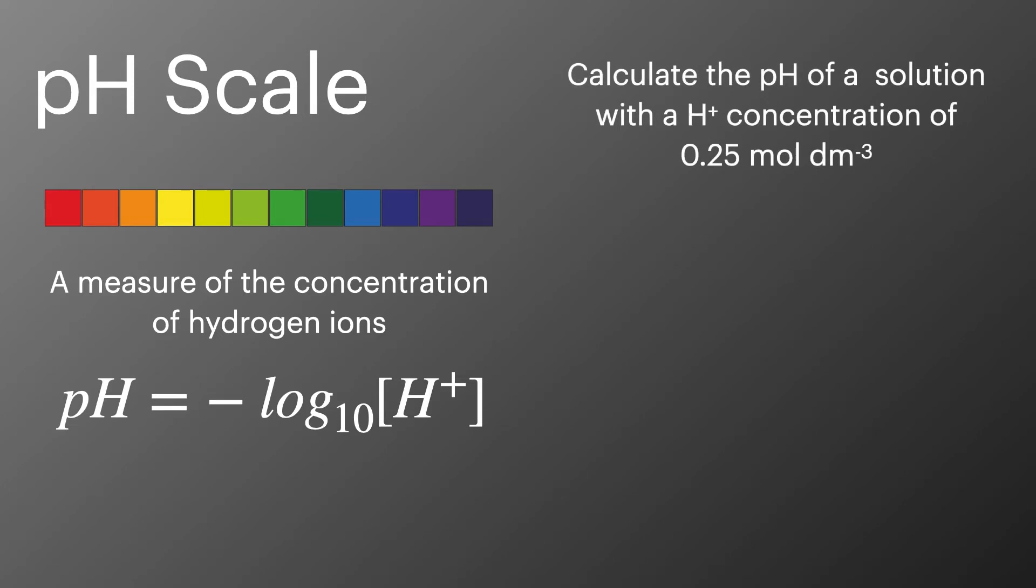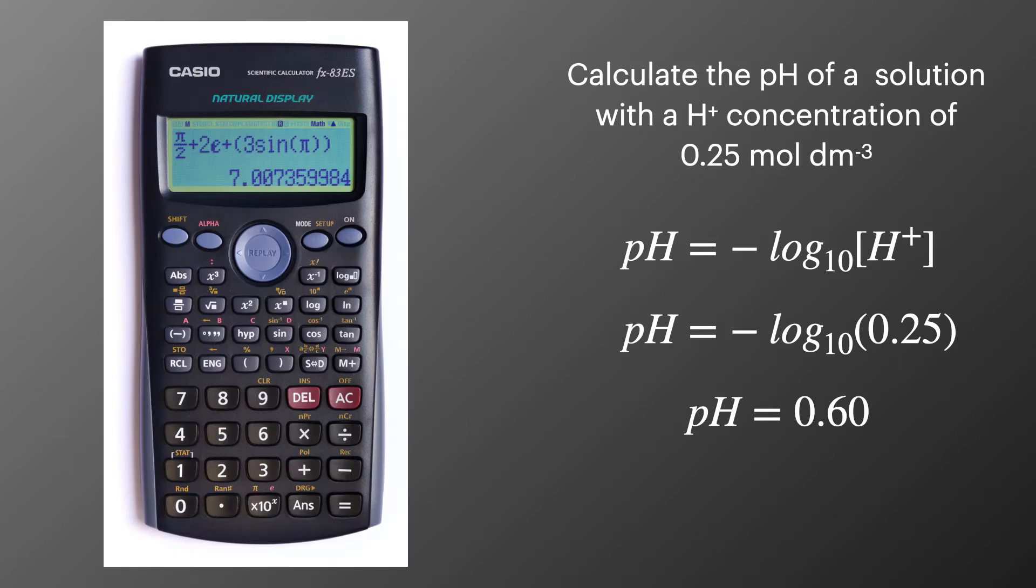In this example we've got the concentration of hydrogen ions at 0.25 moles per decimetre cubed and we can use the equation we've just looked at, add in the values, do the calculation to give us a pH of 0.6. Now with your calculator you'll want to use the buttons shown here in red with a minus sign and the buttons shown here in green for your log.